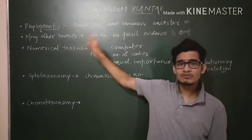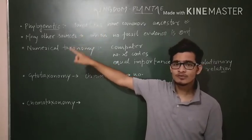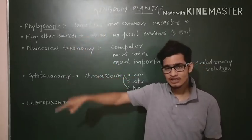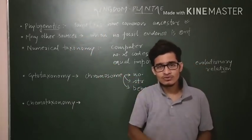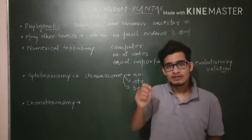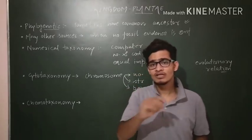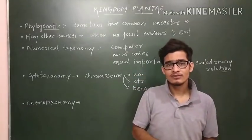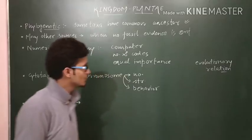So the phylogenetic system is the currently accepted system. It is based on evolutionary relationships and it concludes that the members present in a taxa must have the same ancestors.